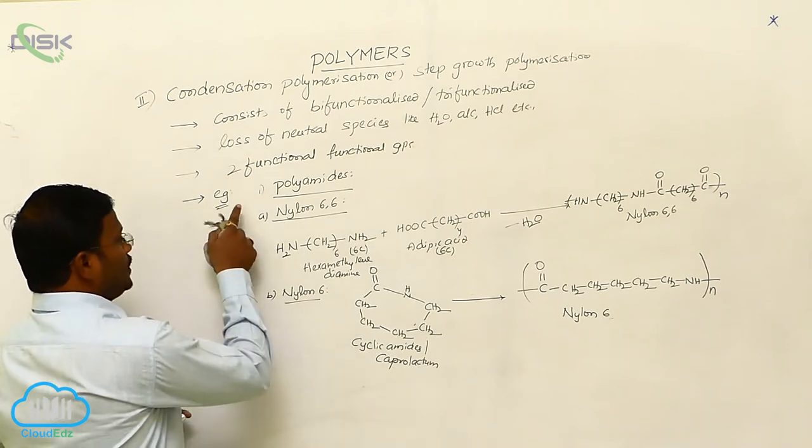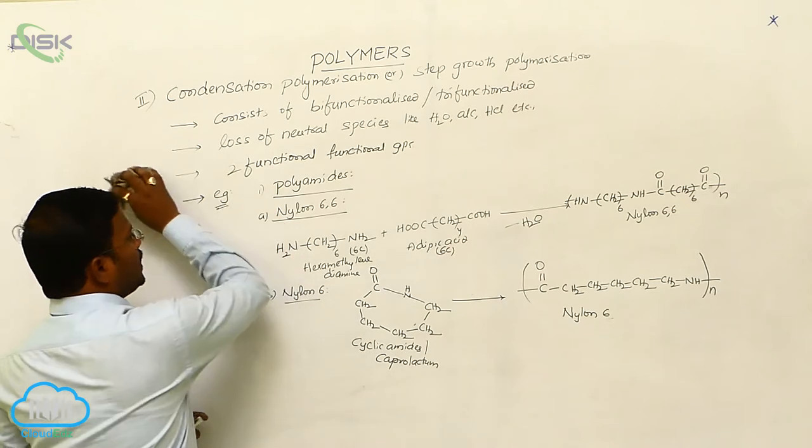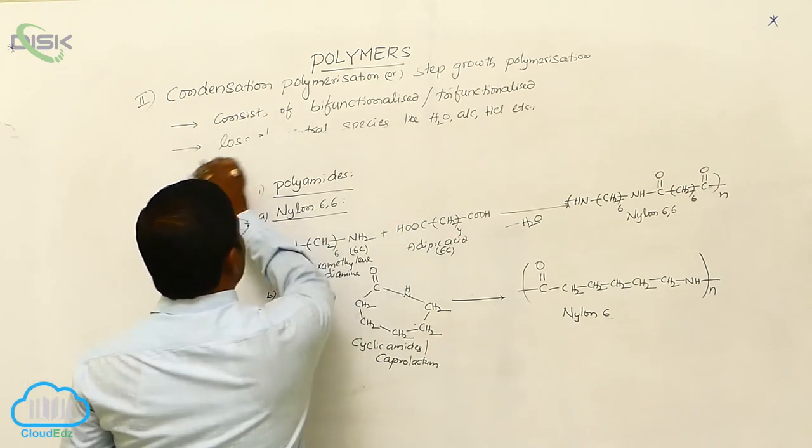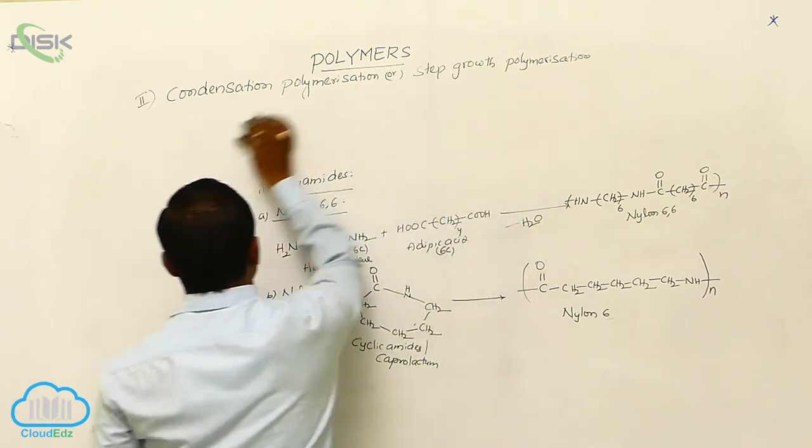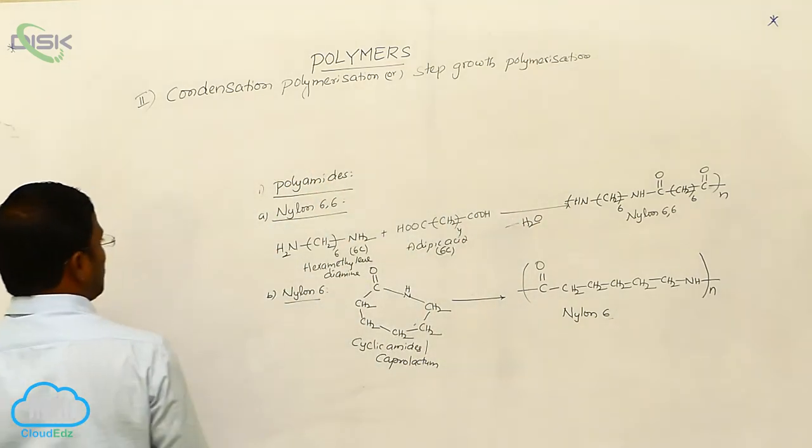Here, these two examples come under polyamide classification or polyamide type. And let us learn more examples to explain condensation polymerization.